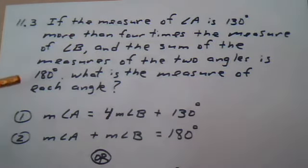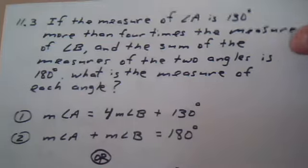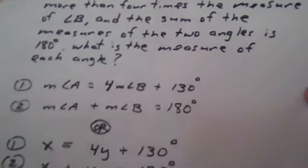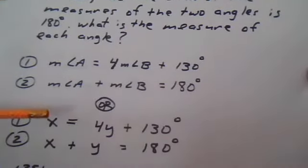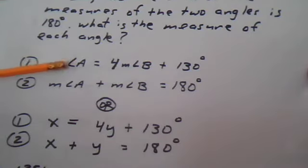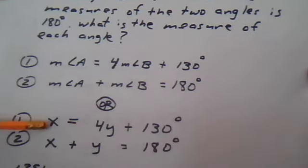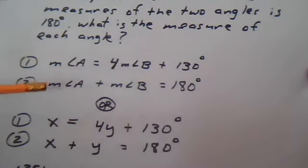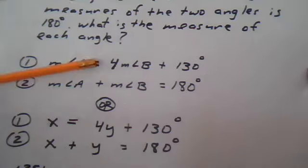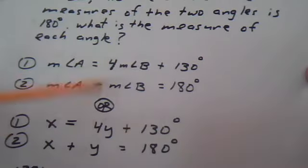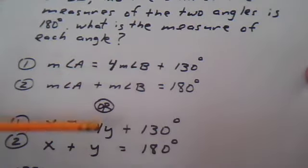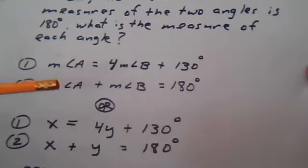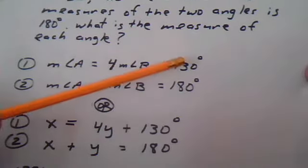Now that's a lot of scribble. It's probably easier. Just let X represent the measure of angle A. So it's easier to write an X than M angle A. So this is the X. The measurement of angle A is X equals 4Y. And let the measurement of angle B be Y. It's easier and quicker to write. Plus 130.